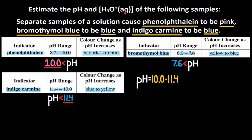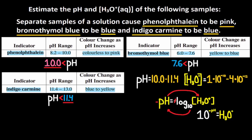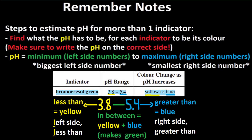The problem wants us to find the H3O+ concentration. Remember: 10 to the negative pH equals H3O+. So we do 10 to negative 10.0 and 10 to negative 11.4, and that gives us an H3O+ concentration between 1×10⁻¹⁰ and 4×10⁻¹² moles per liter. If you remember and understand everything covered, you should be able to estimate the pH for more than one indicator.